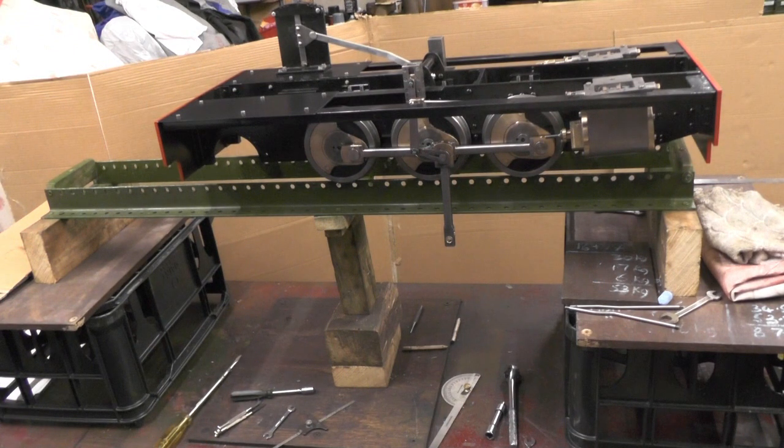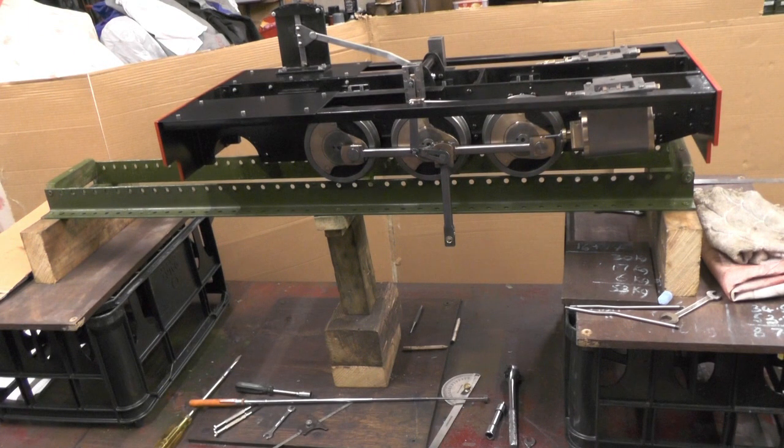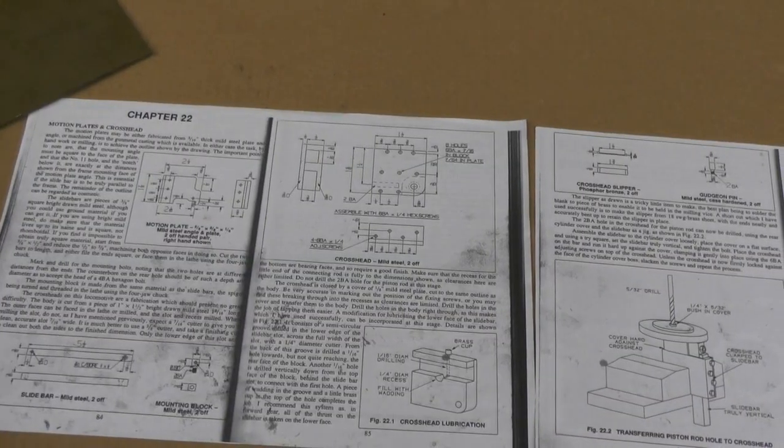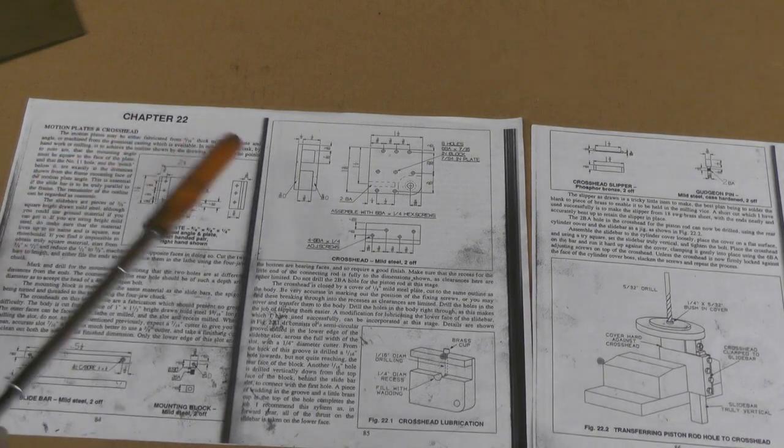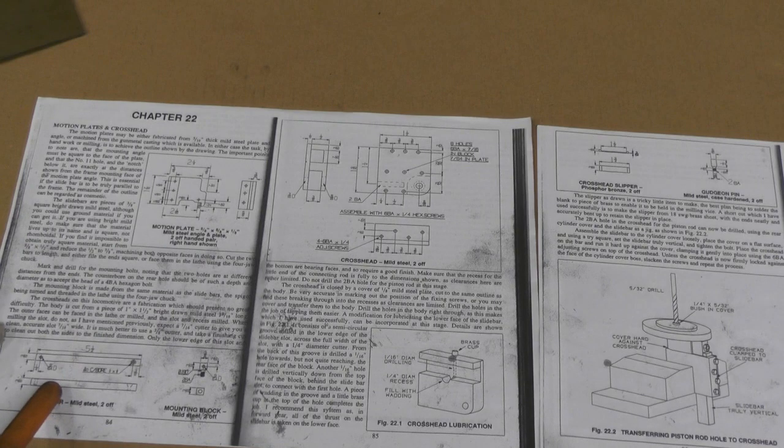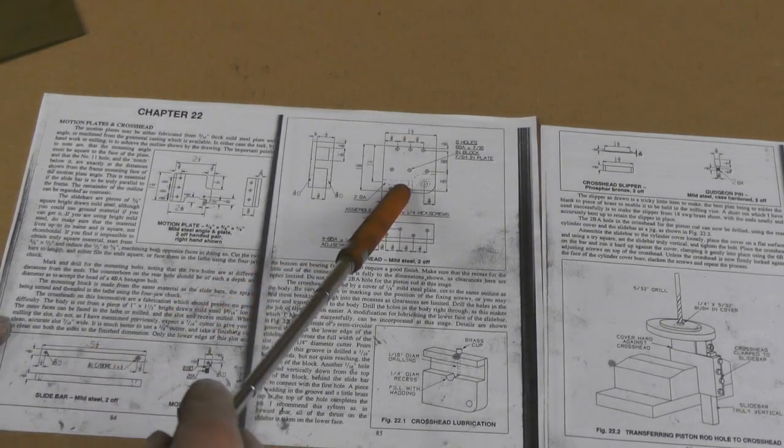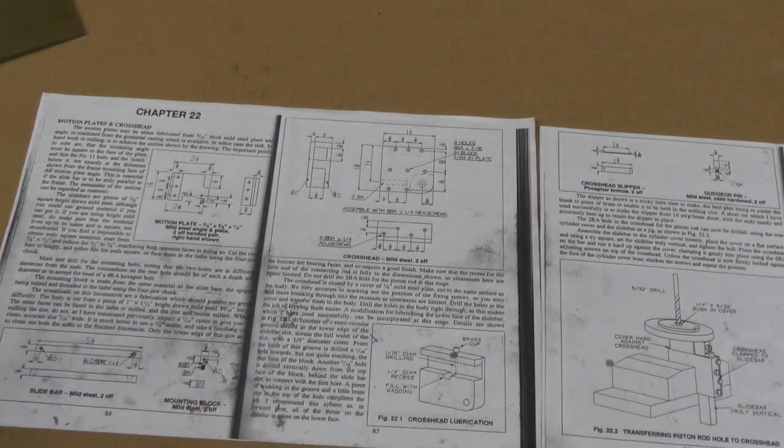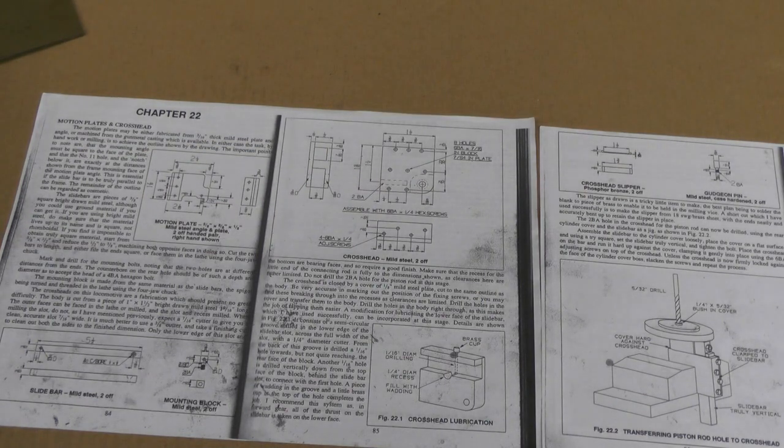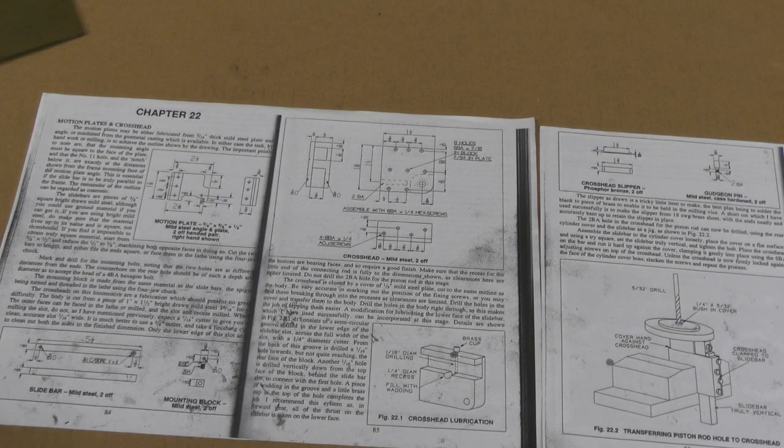Right, I'll move the camera back around and we'll take a quick look at these motion plates. Here we are then - this is going to be my next parts that I'm going to be making: the motion plates, the slide bars, the crossheads, and the crosshead slipper. That's what I'm going to be concentrating on in the next two or three videos. When I first started this project I mentioned many times I was not going to buy any castings - I'm making everything from solid.